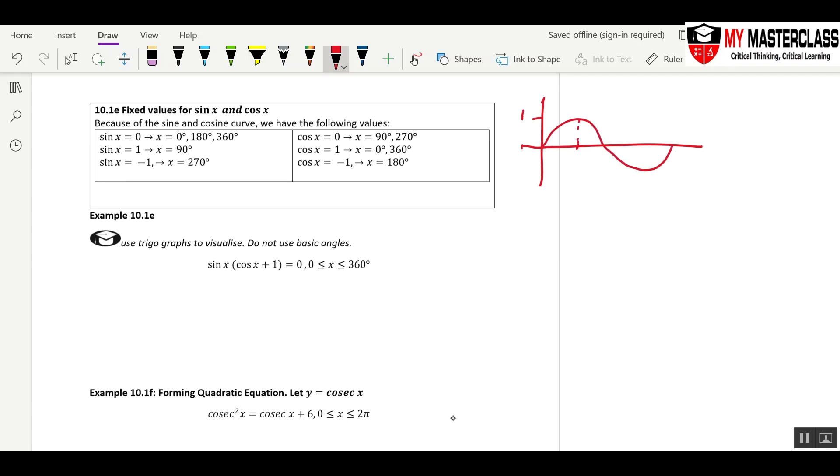So when it is 1, 90. When it is 0, there's three values: 0, 180, and 360. And when it is negative 1, it is 270. So if you have 0, 1, negative 1, we have to just write down the values can already.